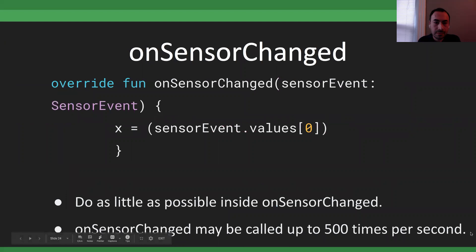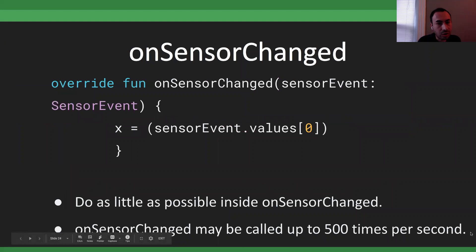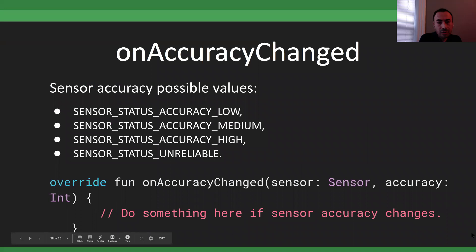One final point about onSensorChanged: do as little as possible inside that function, because it may be called up to 500 times per second for sensors like the accelerometer. Just grab the data and process it elsewhere in your app. For onAccuracyChanged, on my apps I don't notify the user if accuracy is high or medium, but if it's low or unreliable I add code to warn the user and prompt calibration.